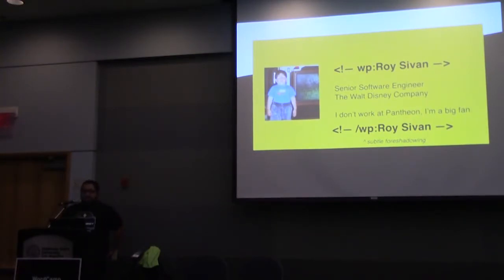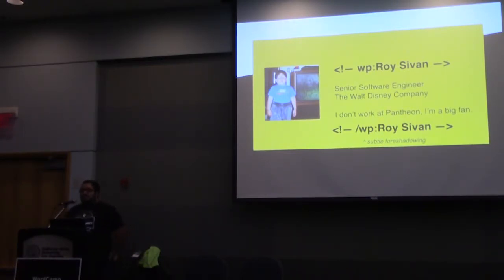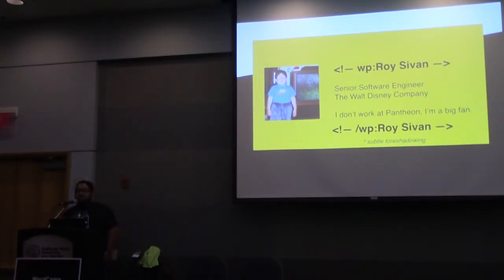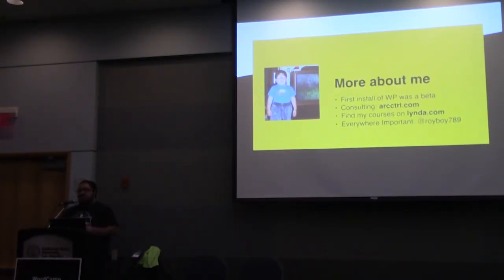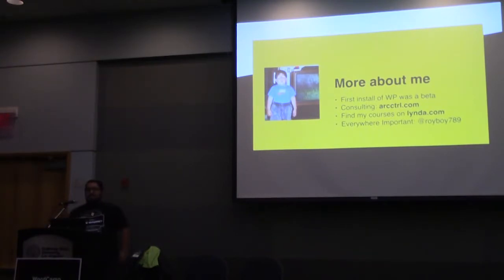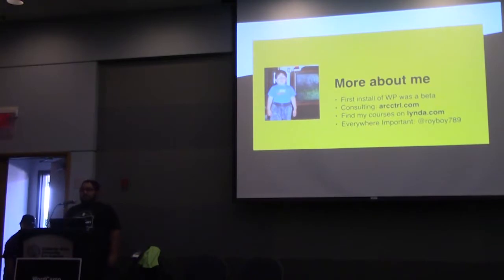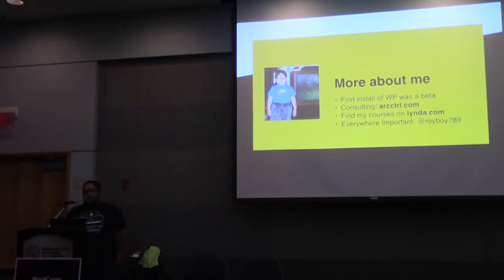About me: my name is Roy Sivan. I'm a senior software engineer at the Walt Disney Company. I build websites for Disney. And as much as I sit at the Pantheon booth and wear Pantheon clothes, I actually don't work at Pantheon. If you're a developer in the audience, there's two types: those who get the joke with my name, and those who don't — and you'll learn about it real quickly. My first install of WordPress was a beta version. I was learning how to develop websites and learned about PHP Include. A friend told me about this blog thing called WordPress, and from then on I've been contributing and using WordPress in all sorts of forms. You can find me online as roydboy789.